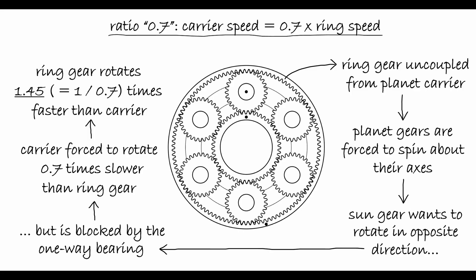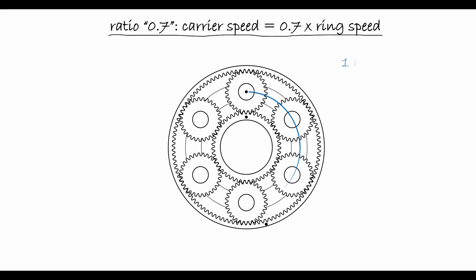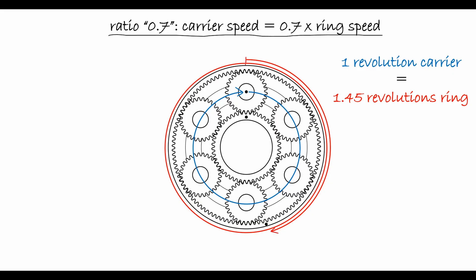Conversely, the ring gear rotates about 1.45 times faster than the planet carrier. That means that for one complete revolution of the planet carrier, the ring gear will perform 1.45 revolutions. Vice versa, for one revolution of the ring gear, the planet carrier will only perform about 0.7 revolutions.